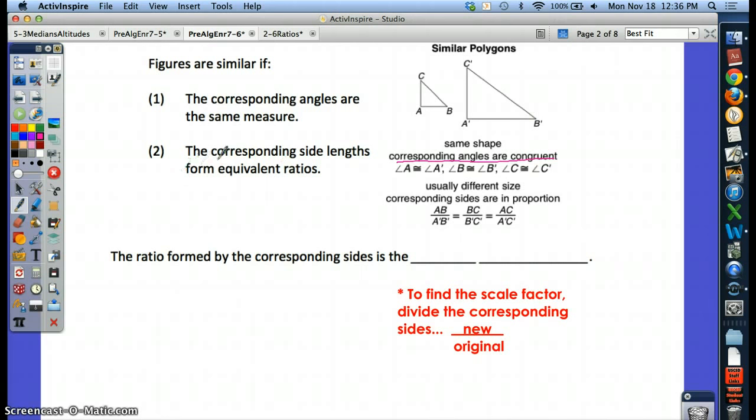The corresponding side lengths form equivalent ratios. That means if AB corresponds to A'B', they're the same side of each triangle. Their ratio—this side divided by this side—would be equal to the ratio of the other corresponding sides. It would be equal to this side divided by this side because those are corresponding, which would also be equal to CB divided by C'B'. So the ratios of the corresponding sides are proportional.